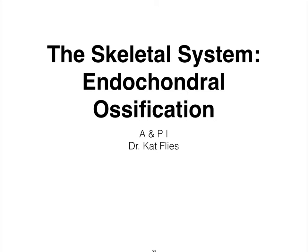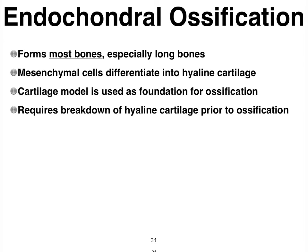The other ossification process that occurs in the fetus is called endochondral ossification. This is the most common way in which our bones are formed. While intramembranous ossification only gives rise to some of the flat skull bones and the clavicles, endochondral ossification gives rise to pretty much all the other bones.